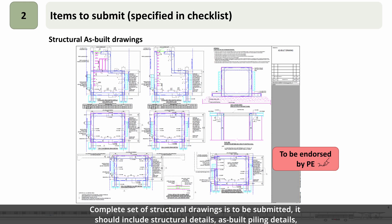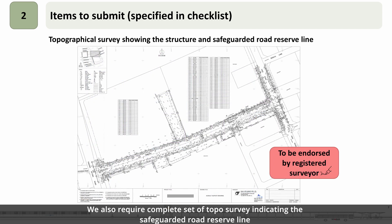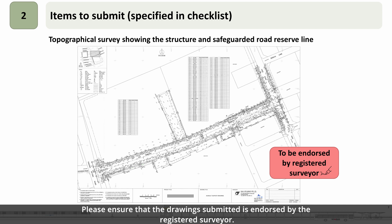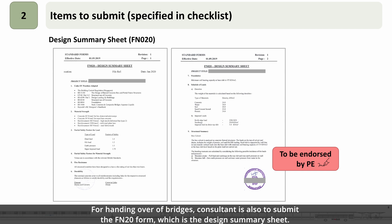A complete set of structural drawings is to be submitted, including structural details, as-built piling details, bearing details, architectural shop drawings, road elevation and sectional drawings, and drainage details. Please ensure the drawings are endorsed by the PE. A complete set of topographic survey indicating the safeguarded road reserve line and the structure to be handed over is also required, endorsed by a registered surveyor. For handing over of bridges, the consultant is also to submit form FN20, the design summary sheet, which shall include the design criteria adopted.